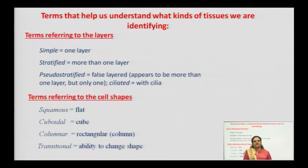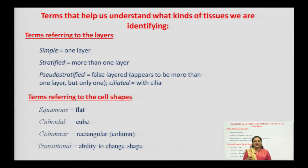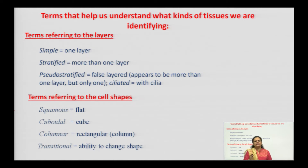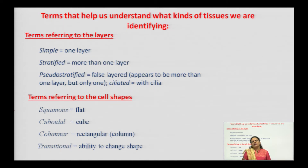The third is pseudo-stratified tissue. Pseudo means false, so pseudo-stratified means falsely layered — it appears multi-layered but is actually a single-layered tissue arrangement. Sometimes we have ciliated epithelial tissues, where cilia-like projections are present. These cilia help to entrap foreign membranes, microbes, and dust particles to protect internal organs. Cilia are present in our respiratory tract, digestive tract, and urinary tract (UTI).